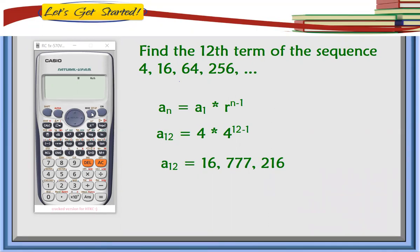Using the calculator, we're going to press mode 1 to clear the memory, then mode, choose stat. Since this is geometric progression, we're going to choose number 6.